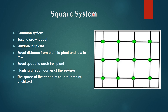Square system. This is a common system and easy to draw the layout. This system is suitable for plants where equal distance from plant to plant and row to row is maintained. Equal space to each fruit plant is available. Planting is done at each corner of the squares. Here you can see in the pictures — this is your square — and at each corner of the square, one plant is planted.